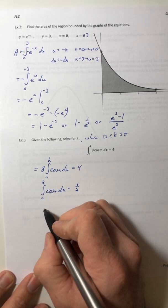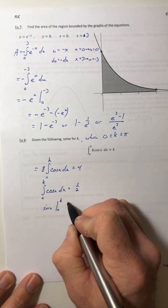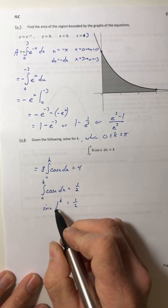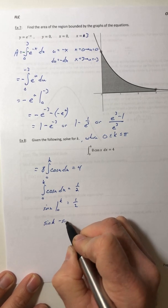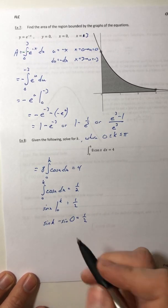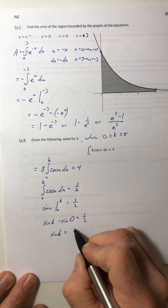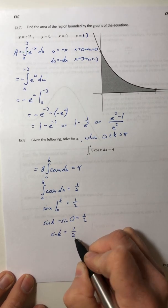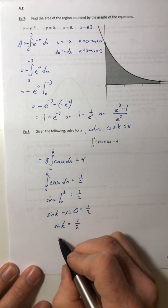So the integral of cosine is sine going from 0 to k. So plug in the bounds. Evaluate the sine of 0. That's just 0. So the left side is sine of k equals a half.